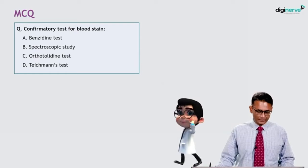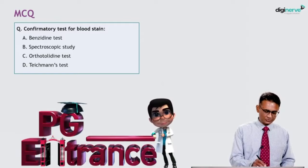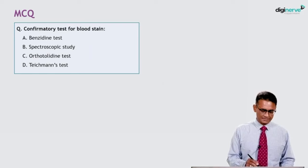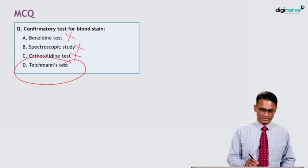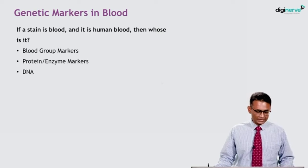MCQ — confirmatory test for blood: the options are A) benzidine test, B) spectroscopic study, C) orthotolidine test, and D) Teichmann test. Benzidine is a presumptive test; spectroscopic study — no; orthotolidine — no. The Teichmann test is the confirmatory test for blood. The correct option is D; the others are presumptive tests.